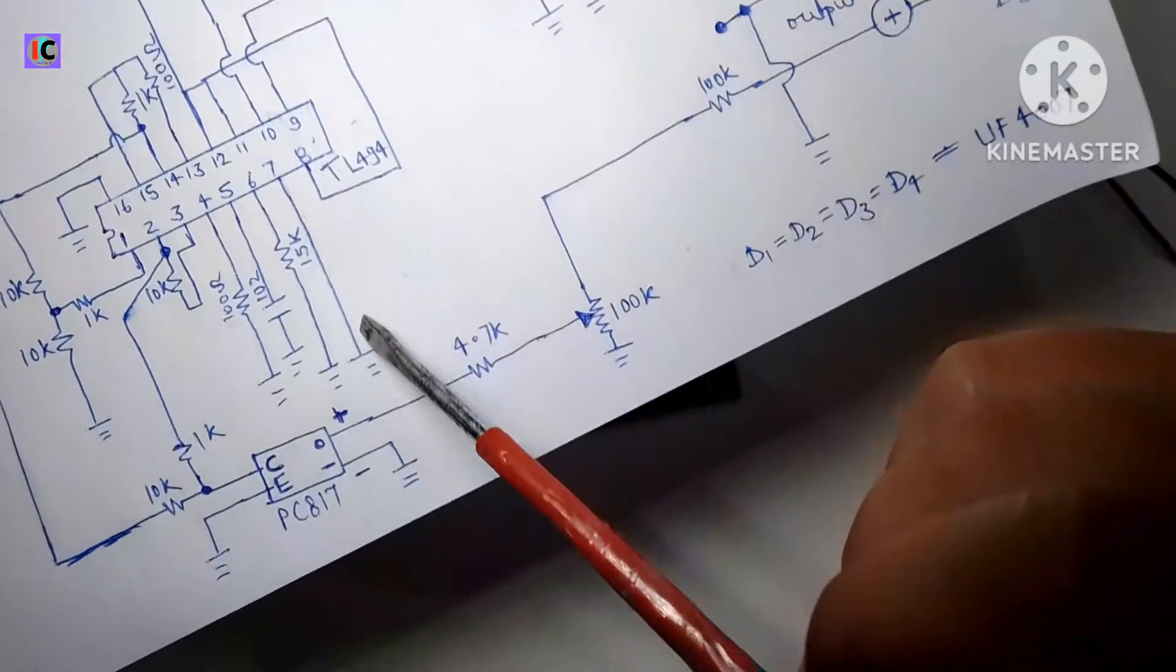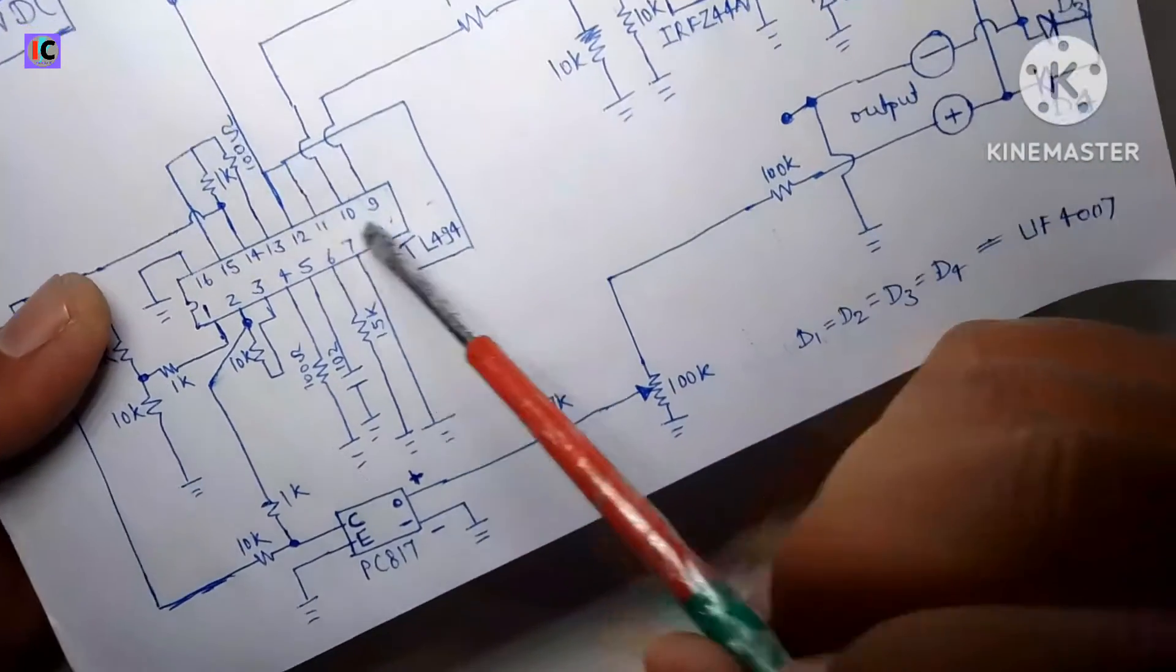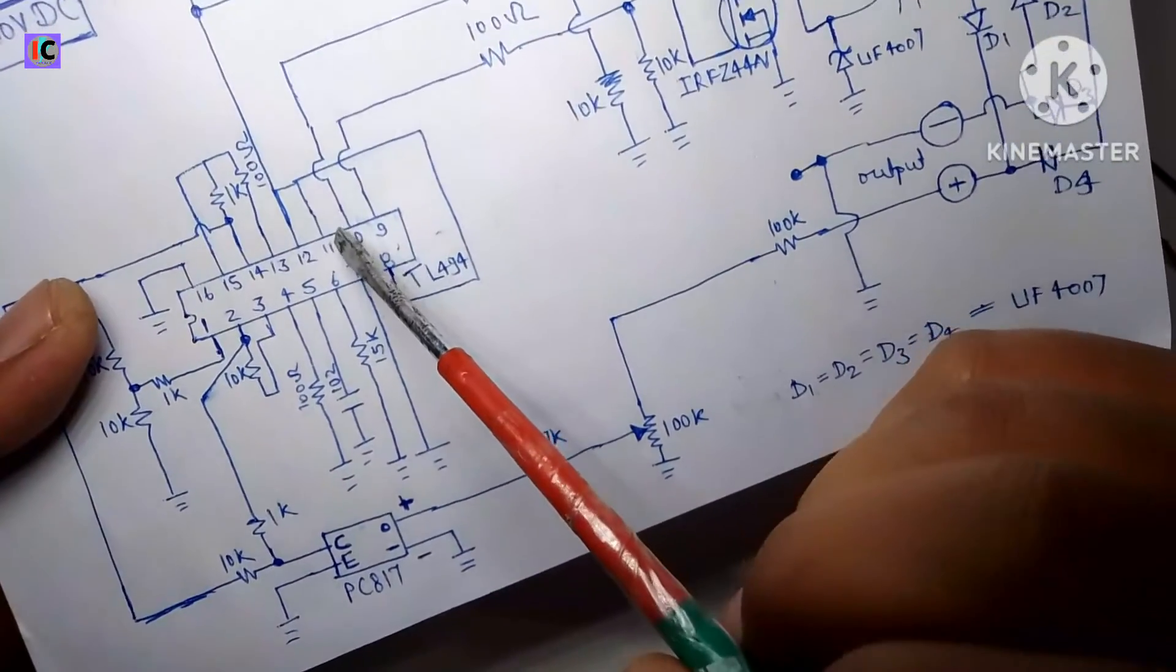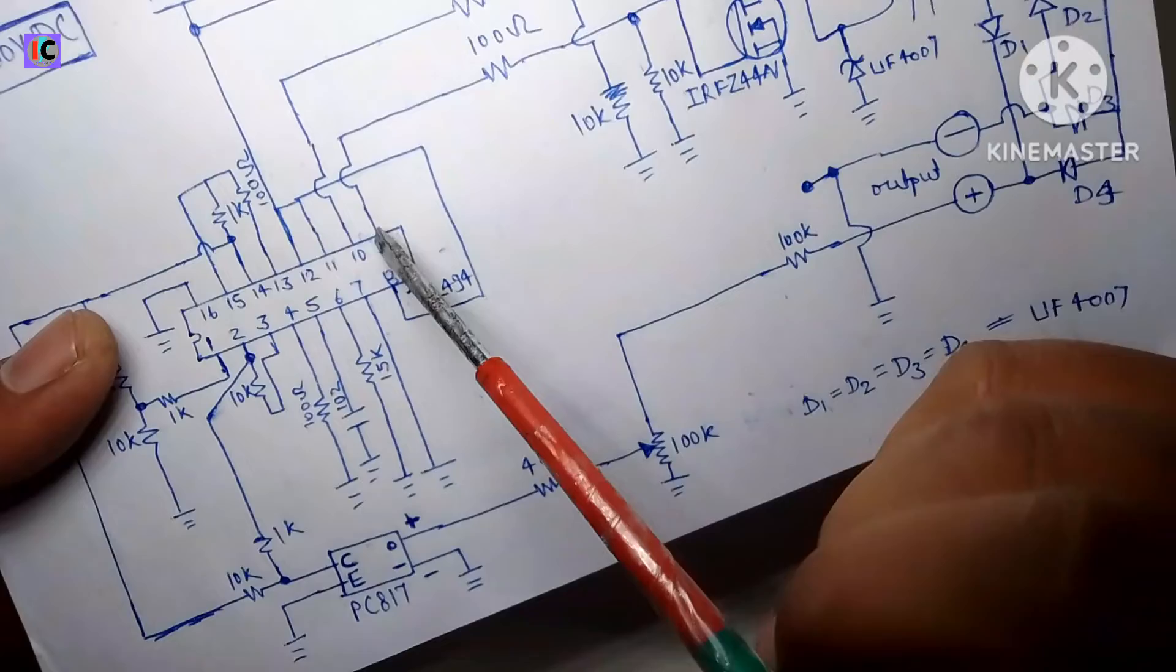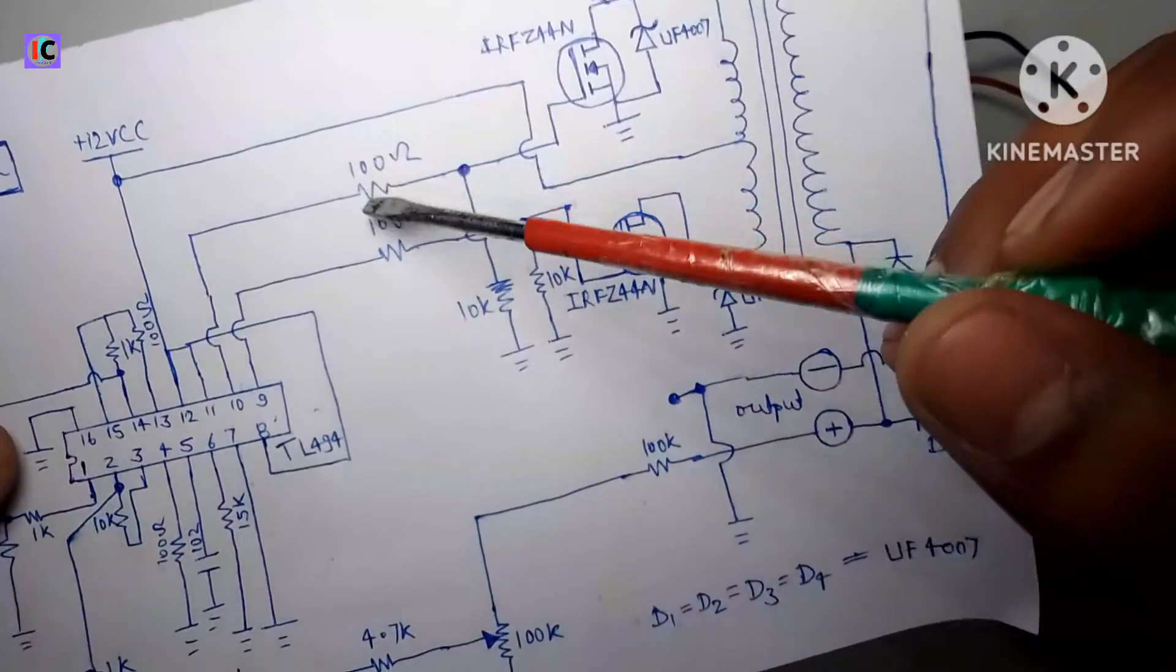Pin number seven is the ground and pin number eight and eleven are the collector pins of this IC which has two transistors, and emitter takes the output to drive these two MOSFETs. And